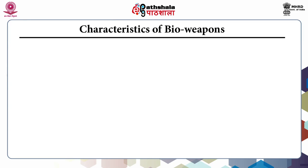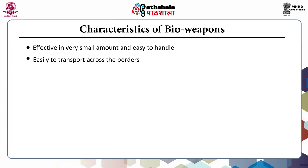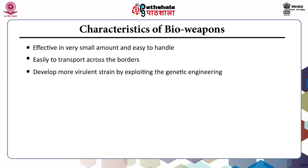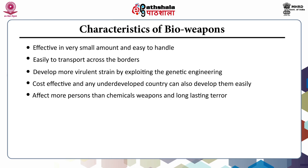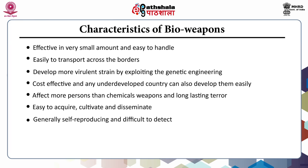The characteristics of bioweapons include: effective in very small amounts and easy to handle; easy to transport across borders; ability to develop more virulent strains by exploiting genetic engineering; cost-effective so that even underdeveloped countries can develop them easily; affect more persons than chemical weapons with long-lasting terror; easy to acquire, cultivate, and disseminate; generally self-reproducing and difficult to detect.